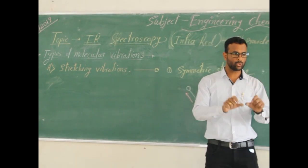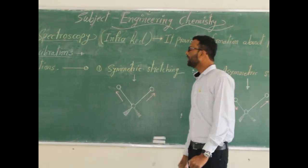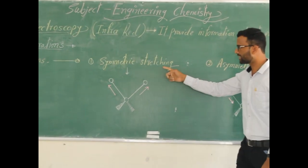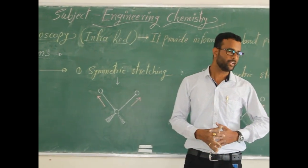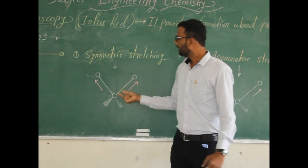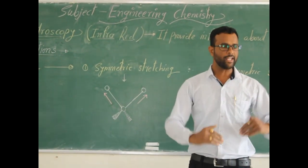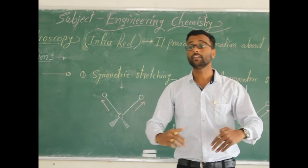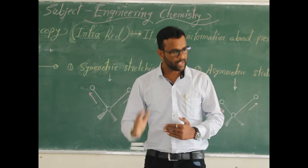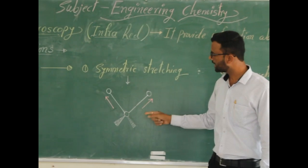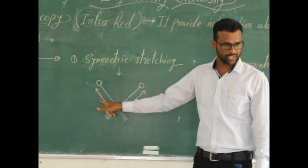Stretching vibrations are classified into two types: symmetric stretching and asymmetric stretching. In symmetric stretching, bond length either increases or decreases symmetrically — the distance between two atoms increases or decreases in the same direction. If you observe the diagram, the stretching is symmetrical, meaning the movement is in the same direction.